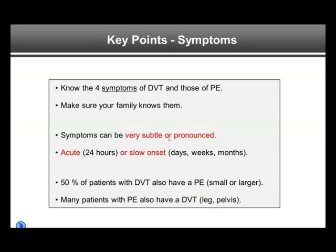Symptoms can be subtle or pronounced. They can happen very suddenly — acutely over 24 hours out of good health — or they can have a slow onset over days, weeks, and sometimes months, slowly creeping up, making it more difficult to recognize what is going on. If we were to scan every patient with DVT, about 50% of patients with DVT also have PEs. These can be small and asymptomatic, and unless one looked with an imaging study, one would not know a PE is present.